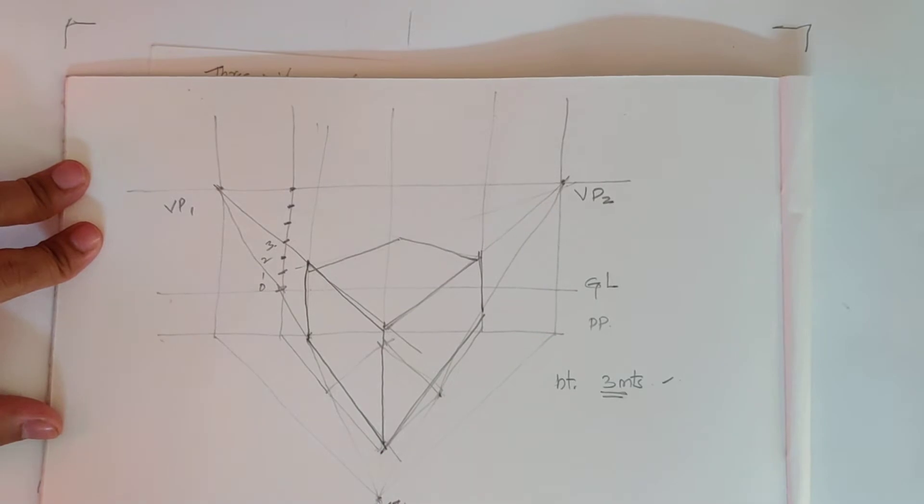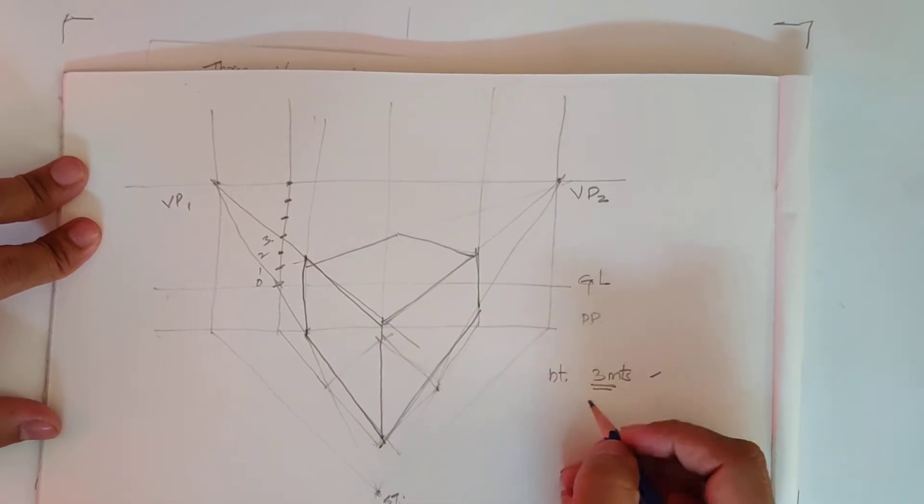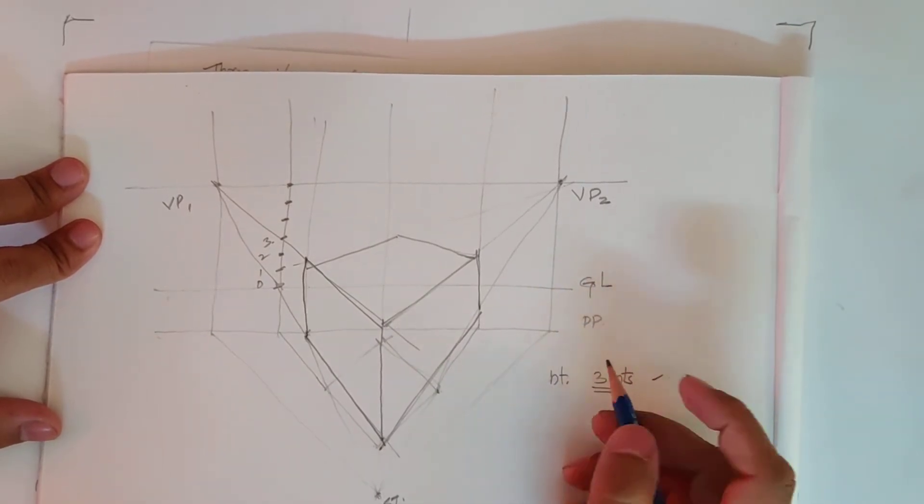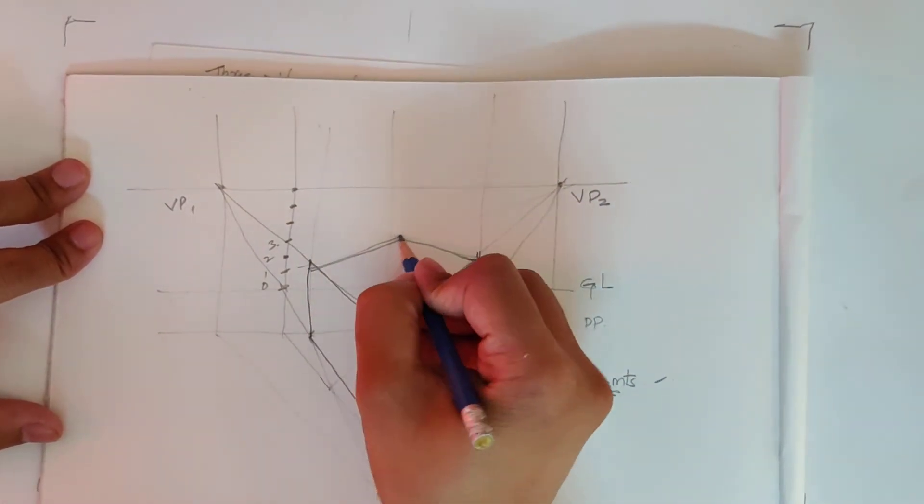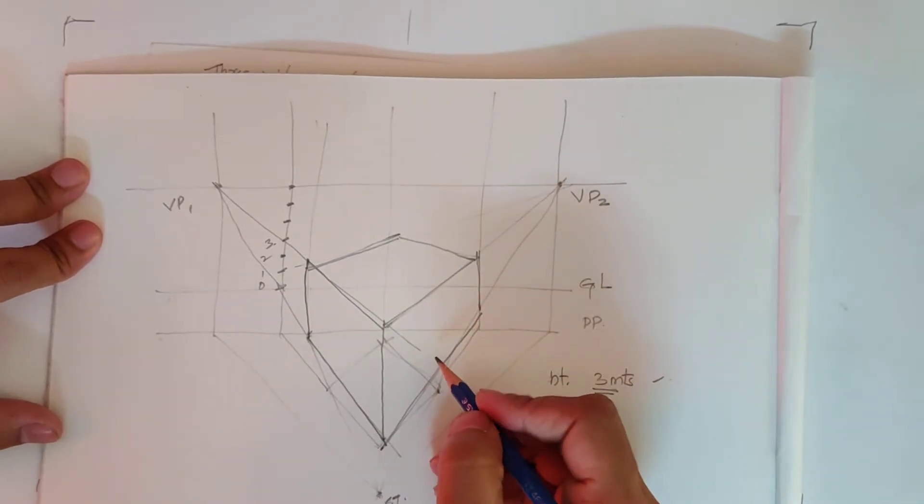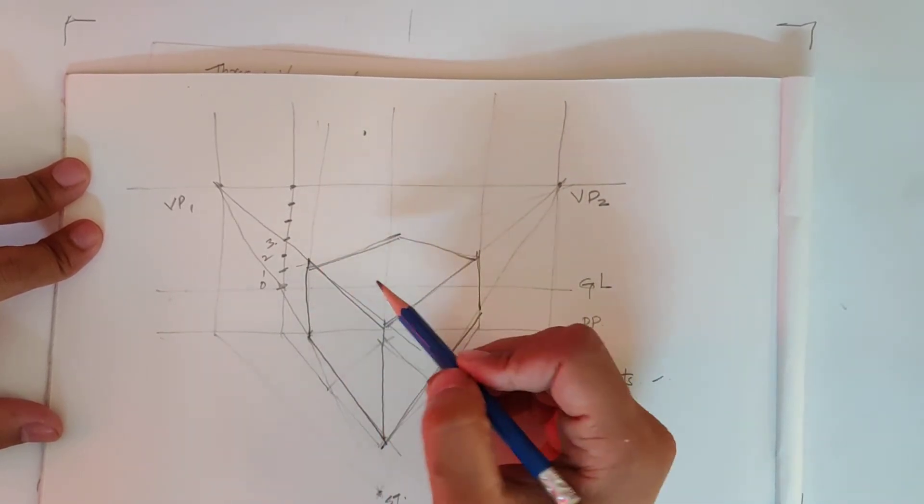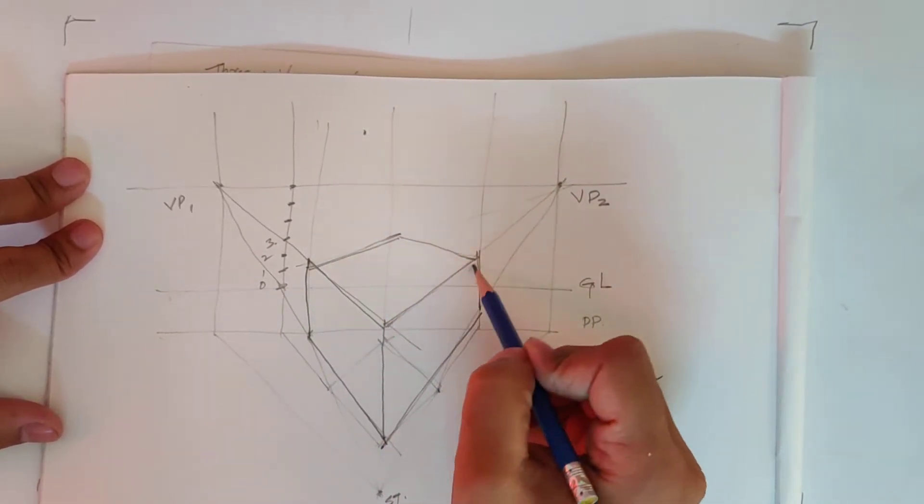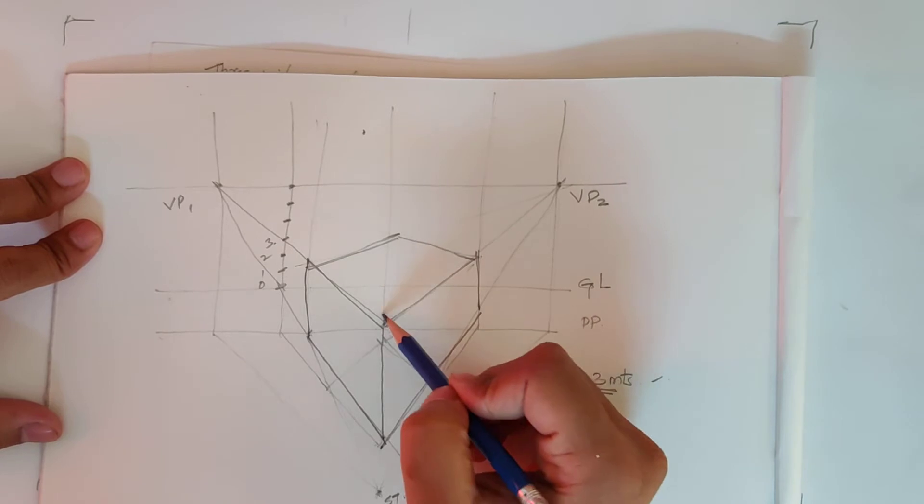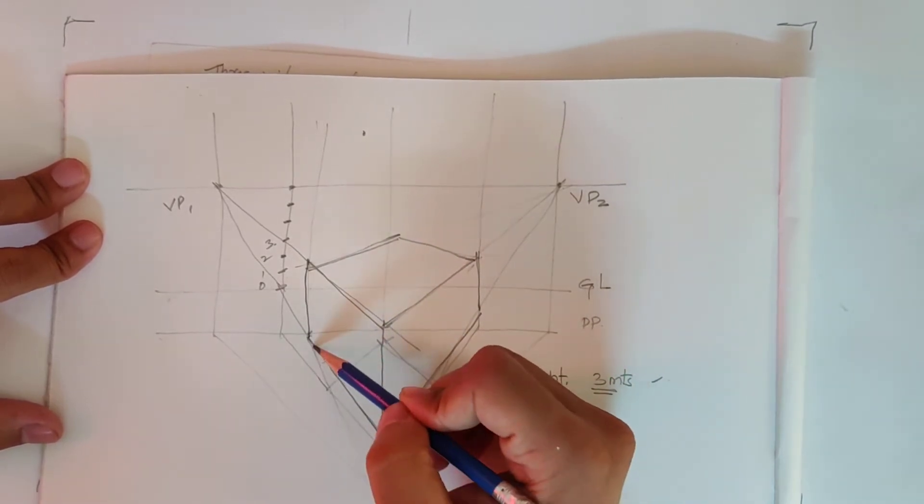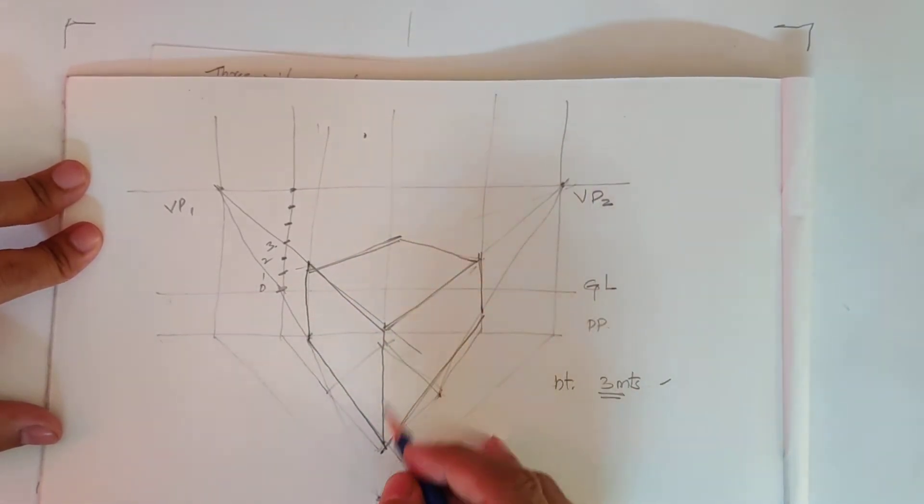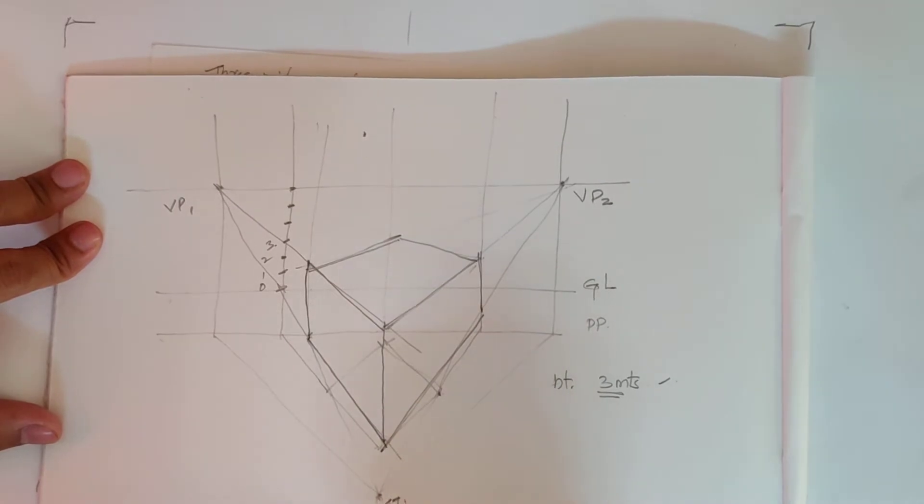So to make this object a three-point perspective, we have to add another vanishing point to it. When we look at anything from the top, what will happen? We would be viewing the top part broader than the bottom part. So that means the vanishing point would lie below the object. This is my third vanishing point.